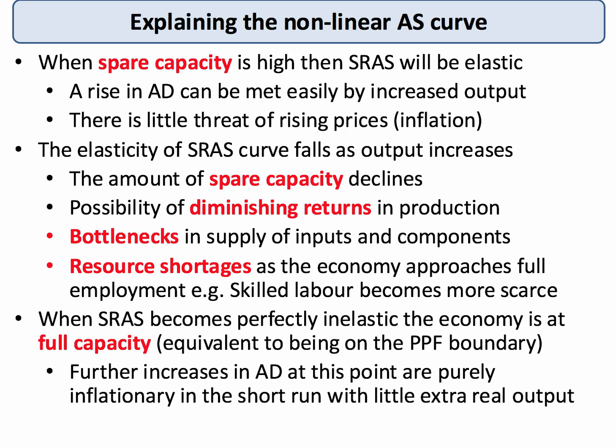When there is a lot of spare capacity in the economy, aggregate supply will be elastic. Any increase in demand can easily be met by expanding production, and there's no real threat of demand pull inflation. As an economy grows and expands and moves closer to its PPF, the elasticity of aggregate supply may fall. The amount of spare capacity diminishes, and there could be some diminishing returns in production, perhaps some supply bottlenecks in the supply of key raw materials or component parts.